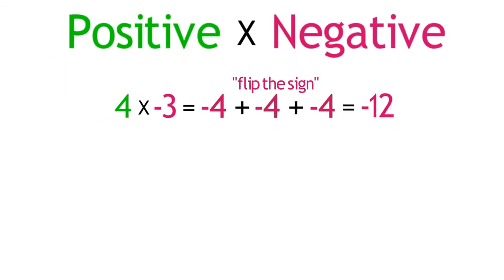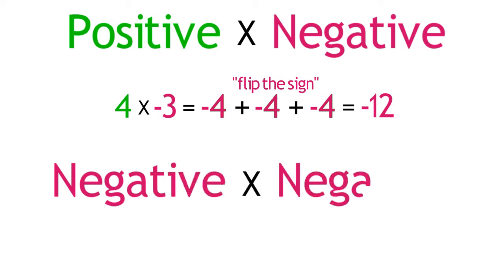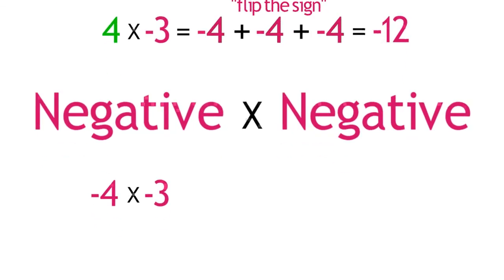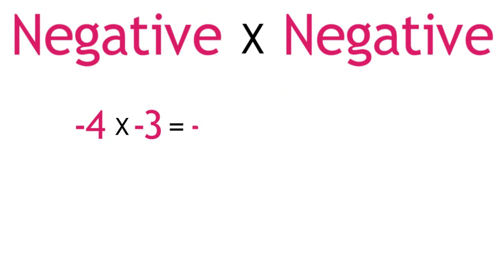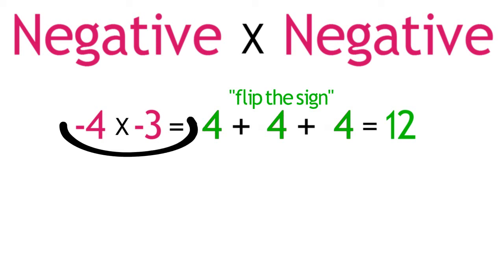For example, negative 4 times negative 3. We're going to use the same procedure we did in the previous problem. Begin by adding negative 4 to itself three times. Negative 4 plus negative 4 plus negative 4. But before we compute the answer, we're going to flip the sign. We're going to change these negative numbers to positive numbers. 4 plus 4 plus 4 equals 12. Voila. Surprise. Negative 4 times negative 3 equals positive 12.